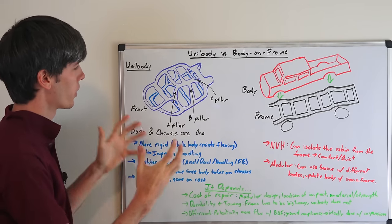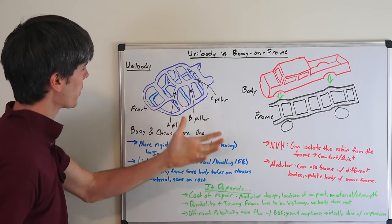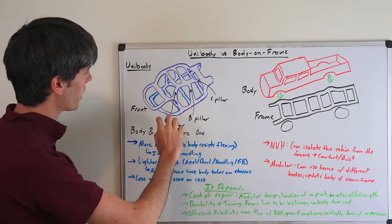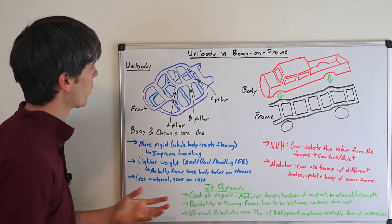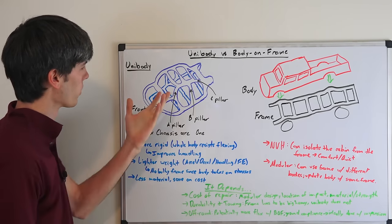Essentially what it is, is the body and the chassis are all one. You probably can't tell that by this drawing, but basically I kind of labeled A pillar, B pillar and C pillar here so you can kind of get an idea. This is the front of the car because it probably doesn't make any sense looking at this, but essentially it's all just one body, just one piece, the chassis is all one, which is very different from body on frame.